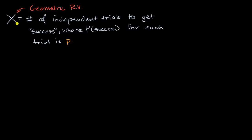Right here we have a classic geometric random variable. We're defining it as the number of independent trials we need to get a success, where the probability of success for each trial is lowercase p. We have seen this before when we introduced ourselves to geometric random variables. Now the goal of this video is to think about what is the expected value of a geometric random variable like this.